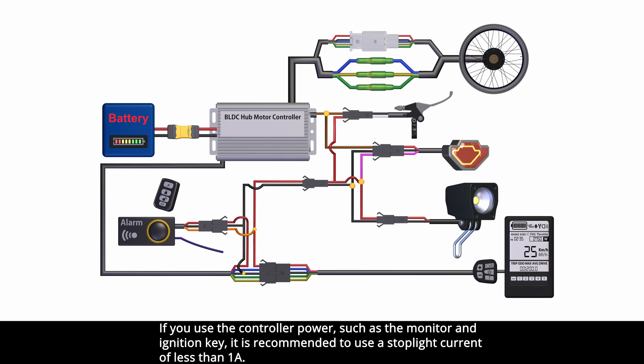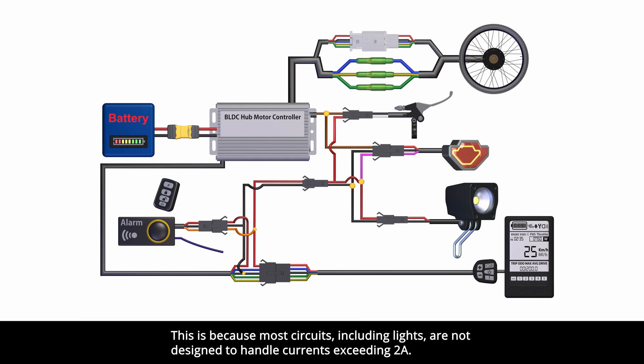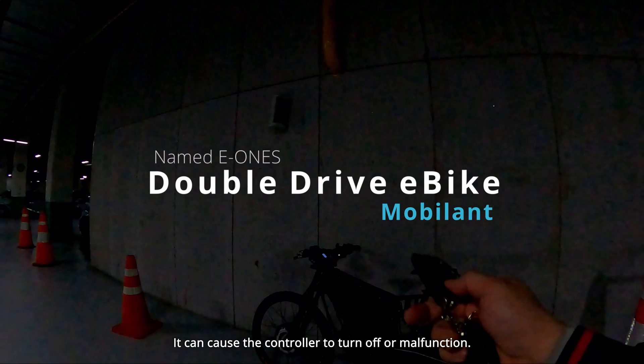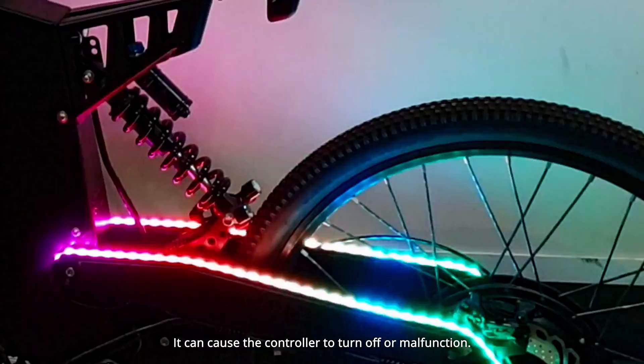it is recommended to use a stoplight current of less than 1 Ampere. This is because most circuits, including lights, are not designed to handle currents exceeding 2 Amperes. It can cause the controller to turn off or malfunction.